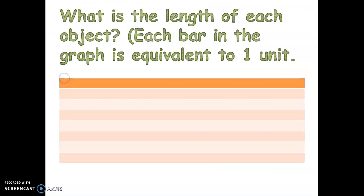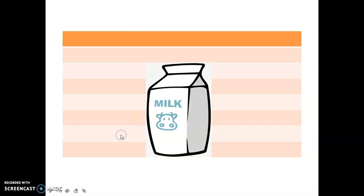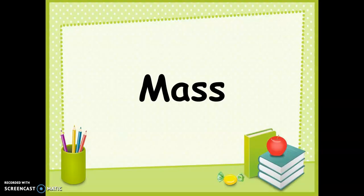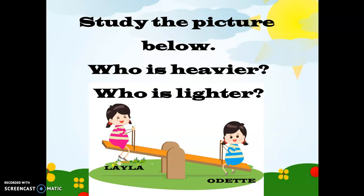Let's have some examples. We are going to find out the length of each object. Each bar in the graph is equivalent to one unit. First, this is a carton of milk — how many units? Very good, six units long! Next is the rubbing alcohol — how many units long? Very good, five units! Now let's go to mass.